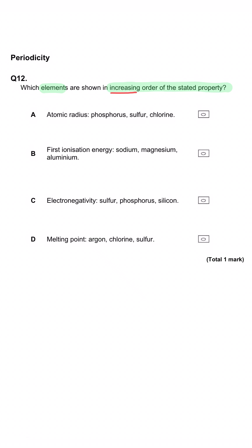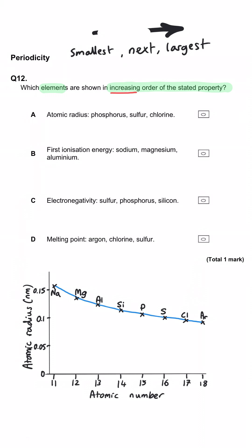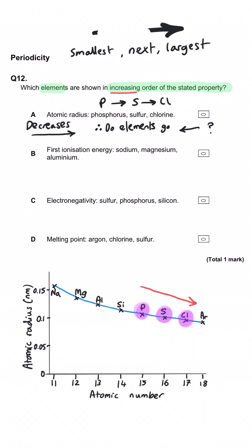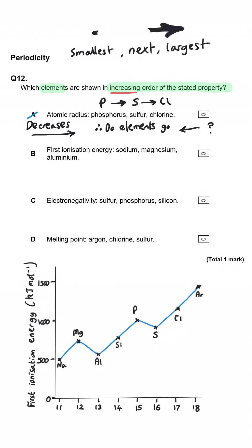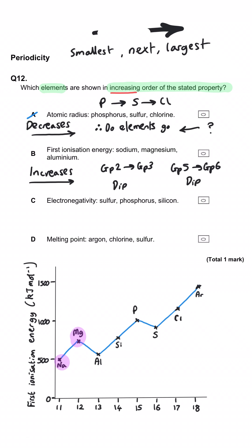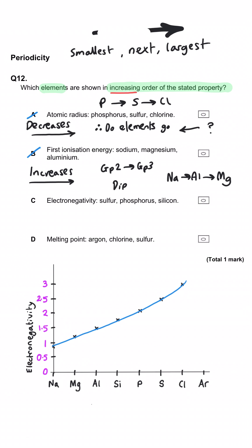Which elements are shown in increasing order of the stated property? For atomic radius — phosphorus (group 5), sulfur (group 6), chlorine (group 7) — this is wrong because atomic radius decreases across the period. For first ionization energy — sodium, magnesium, aluminium — there is a general increase but there is a dip between magnesium and aluminium, so this is incorrect. For electronegativity — sulfur, phosphorus, silicon — electronegativity increases across the period, but this list goes from right to left, so this is wrong too.